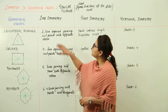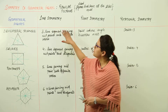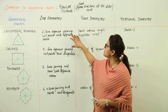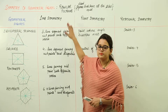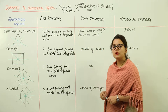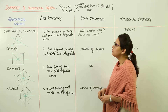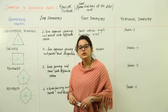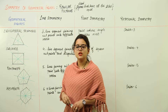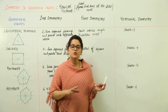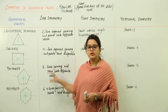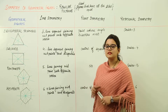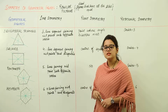Now we have the symmetry of geometrical figures, but these geometrical figures are going to be the regular polygons. Regular polygons are those polygons, or closed figures, that have all the sides equal to each other. So here we are going to discuss the regular polygons specifically — the figures that have all sides equal.